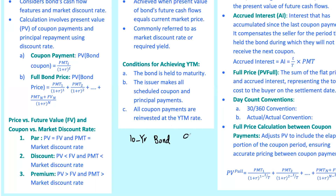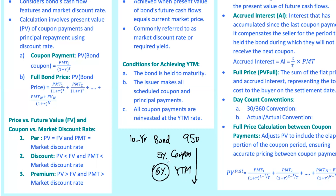Say you bought a 10-year corporate bond for $950 — below par — with a 5% coupon rate while the current market YTM is 6%. If you hold it to maturity, your YTM will reflect the gains from buying it at a discount plus the reinvested coupons. Sweet deal, right?